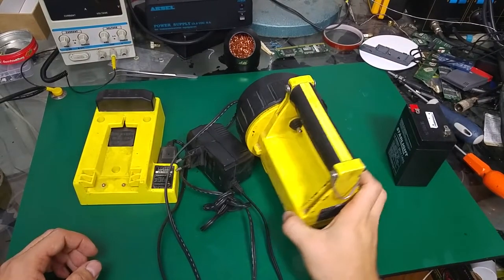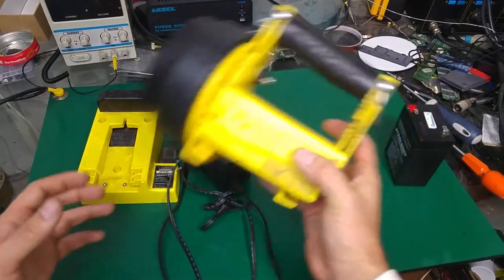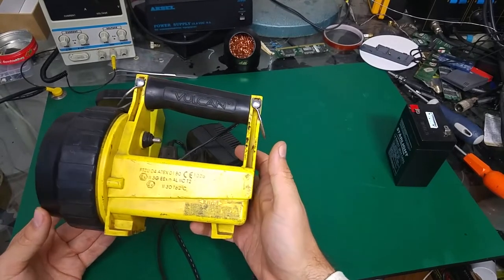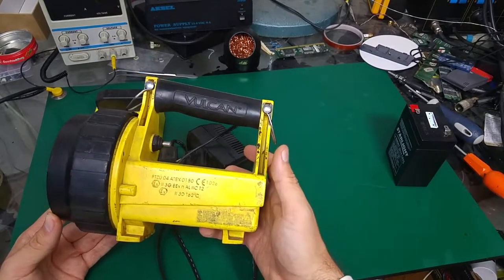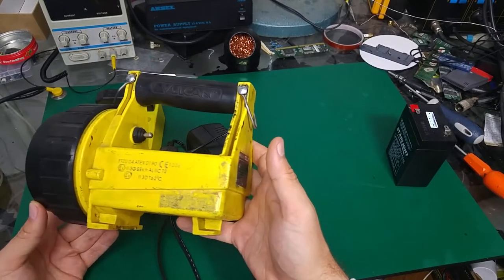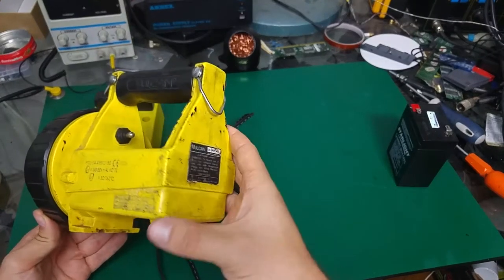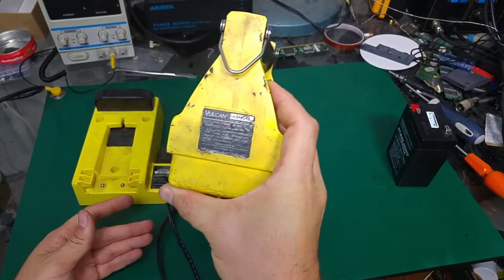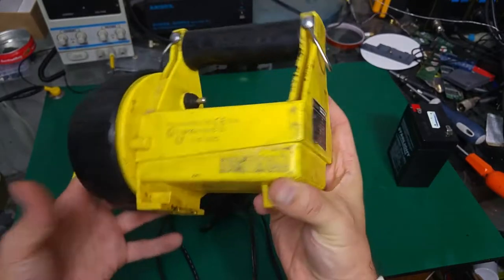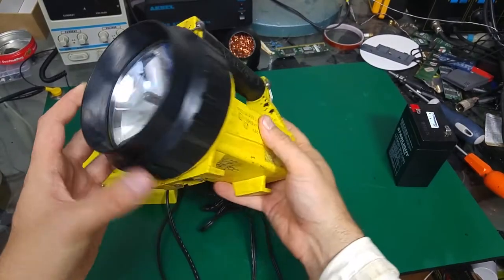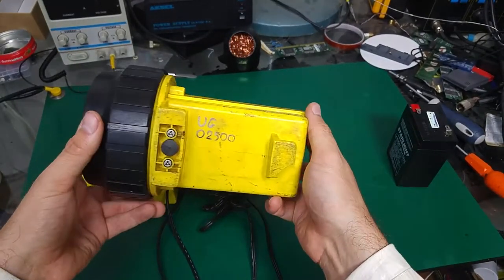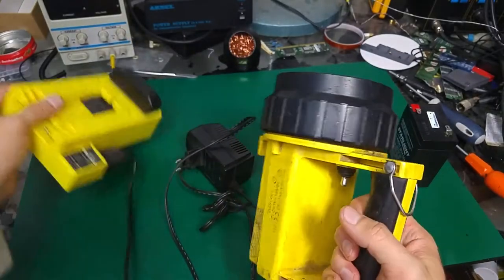Hello guys, today I would like to show you how to fix this Vulcan ATX flashlight. This is an industrial standard flashlight used for example by firefighters or in the oil industry.